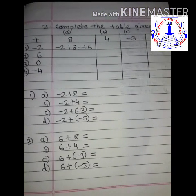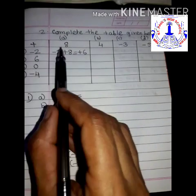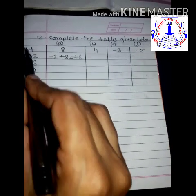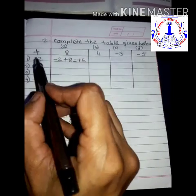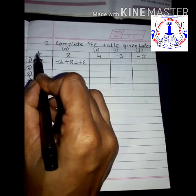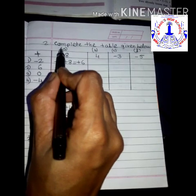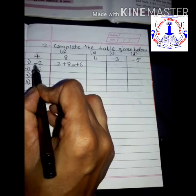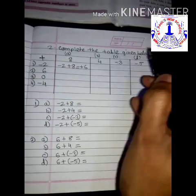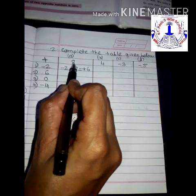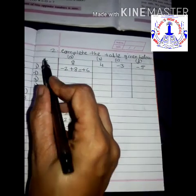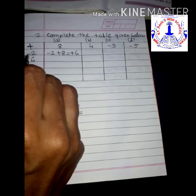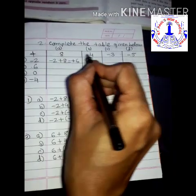Question number 2 says: complete the table below. There are 4 numbers given — minus 2, 6, 0, and minus 4. A positive sign is common for all. You have to take each number and add 8, 4, minus 3, and minus 5 to it. Below the table, we are solving it one by one. Let's start with the first number, minus 2, and add all these numbers to it — that gives us A, B, C, and D.